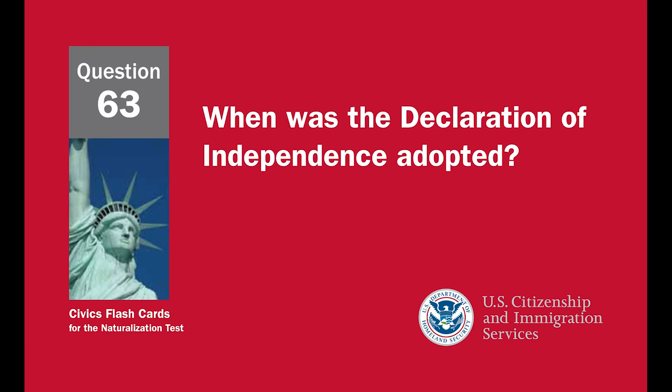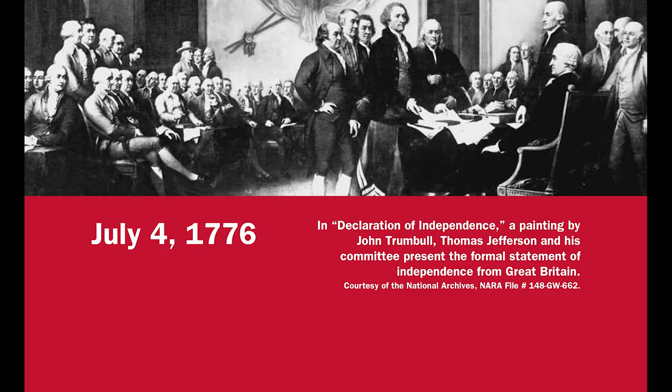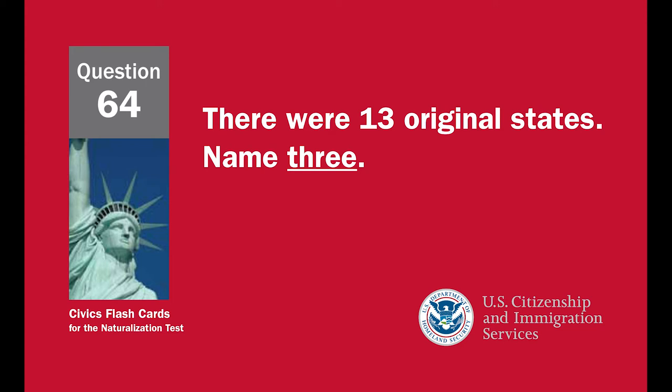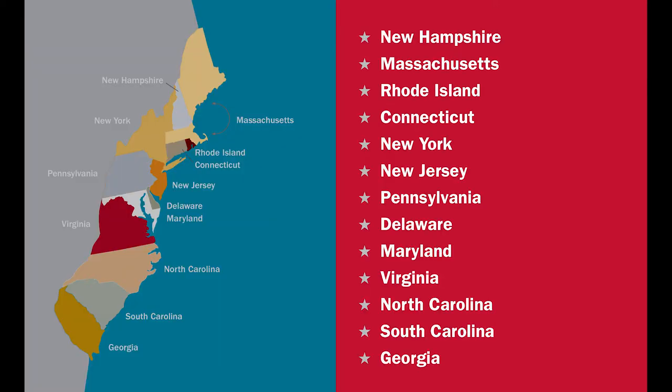Who wrote the Declaration of Independence? Thomas Jefferson. When was the Declaration of Independence adopted? July 4th, 1776.